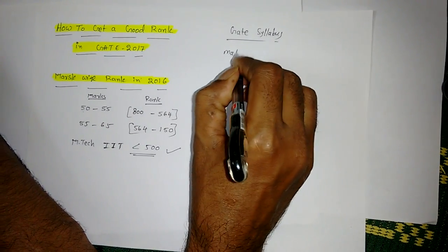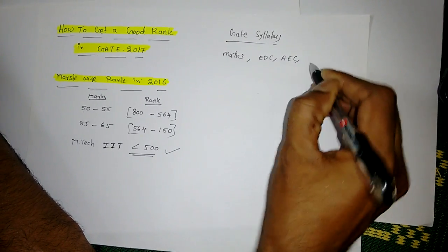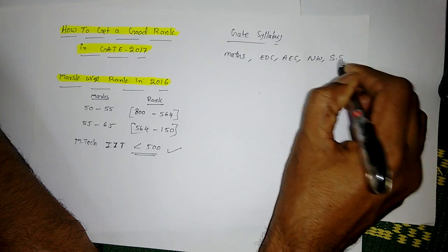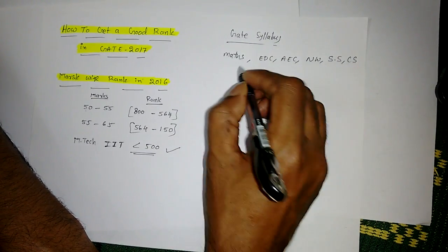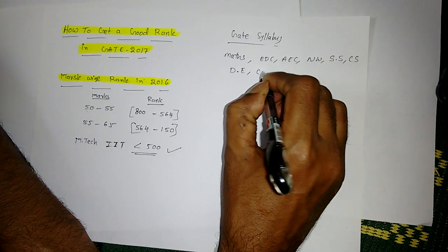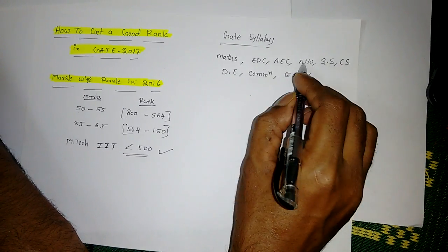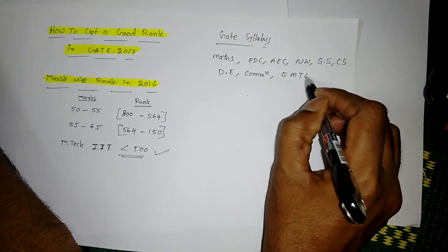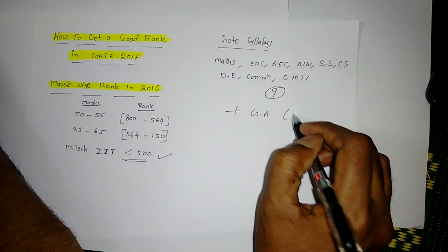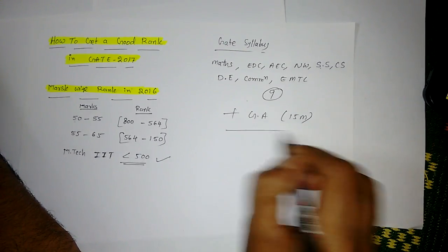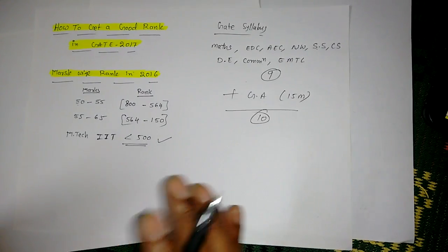If you take the subjects in GATE syllabus, there will be Mathematics, MASS, EDC, AEC, Network Theory, Signals and Systems, Control Systems, Digital Electronics, Communication, and EMTL. That's nine subjects, and plus General Aptitude which is for 15 marks. Total 10 subjects. We will divide this and plan accordingly.